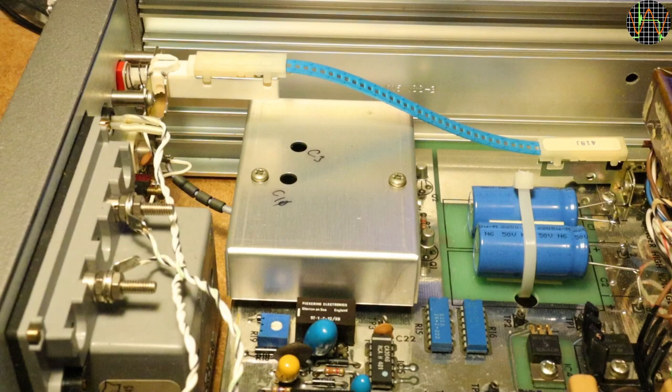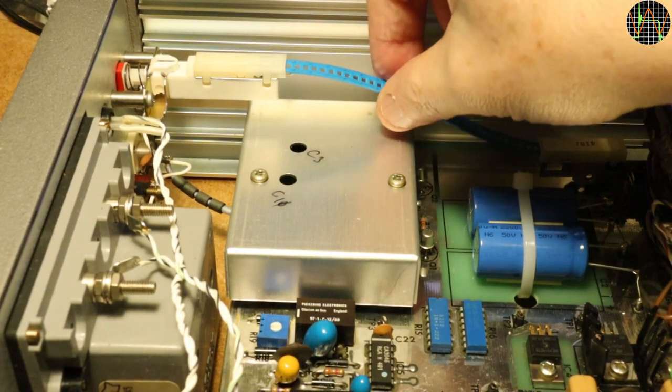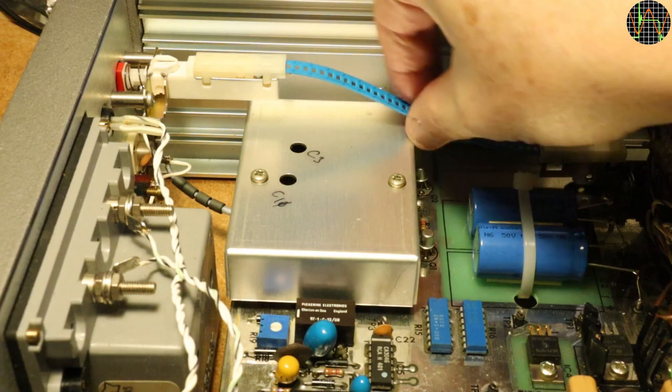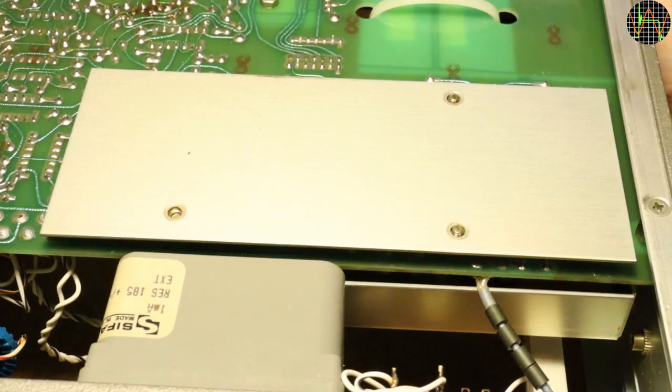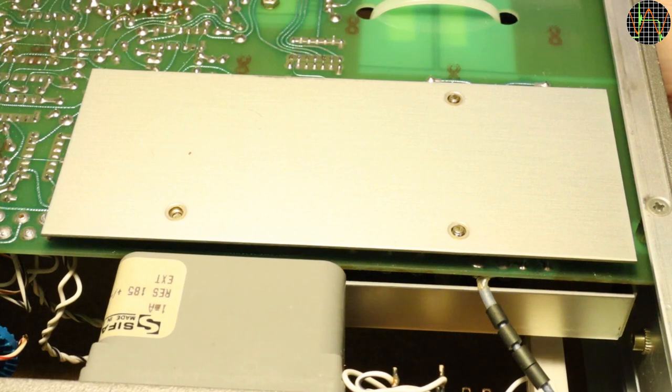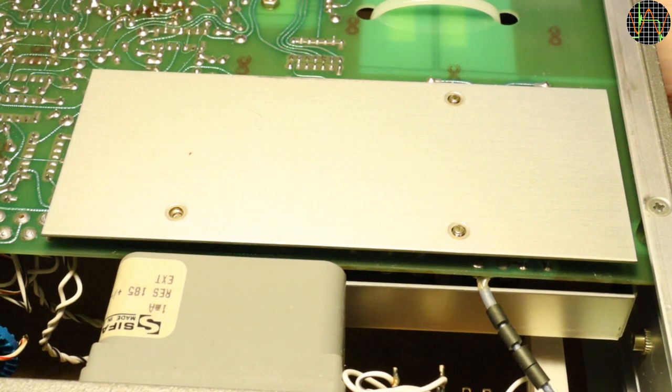R14 is in the shielded area. To get the shield out from under the mains power switch actuator, I actually had to remove the actuator from the front panel. That stiff blue ribbon transfers the push action from the front to the switch at the rear, which keeps the mains well away from the sensitive front end. Shielding continues on the solder side, which means this will have to be removed as well.